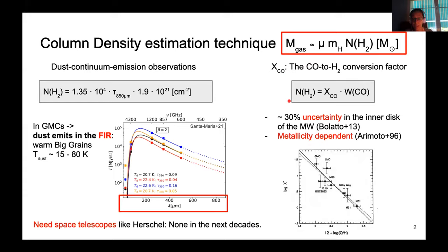With this factor has the problem that it has a 30 percent uncertainty in the inner disk of the Milky Way, and it is also metallicity dependent. So we need an alternative method with lesser sensitivity.